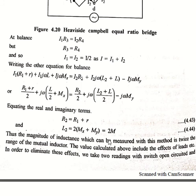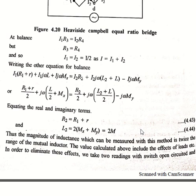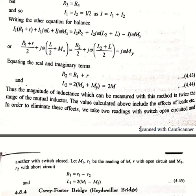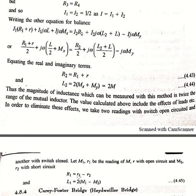Equating the real and imaginary terms, we get R2 equal to R1 plus r, and L2 equal to 2(Mx plus My), which equals 2 times the mutual inductance. So the magnitude of inductance measurable by this method is twice the mutual inductance. The calculated value also includes the effect of leads. To eliminate this effect, two readings are taken: one with open circuit giving M1 and small r1, and one with closed circuit giving M2 and r2. Solving, we get R2 equal to small r1 minus r2 and L2 equal to 2(M1 minus M2).